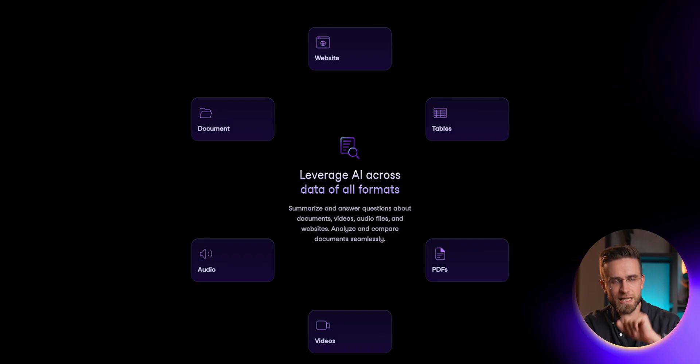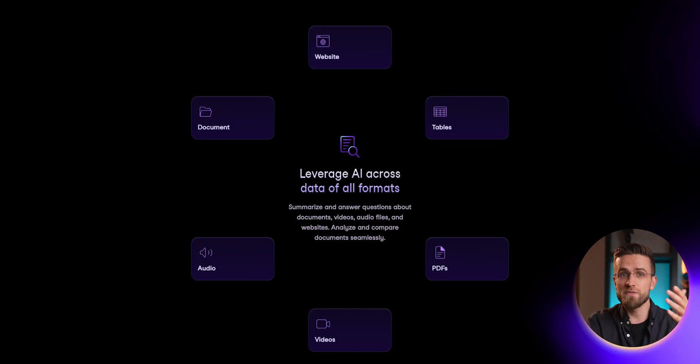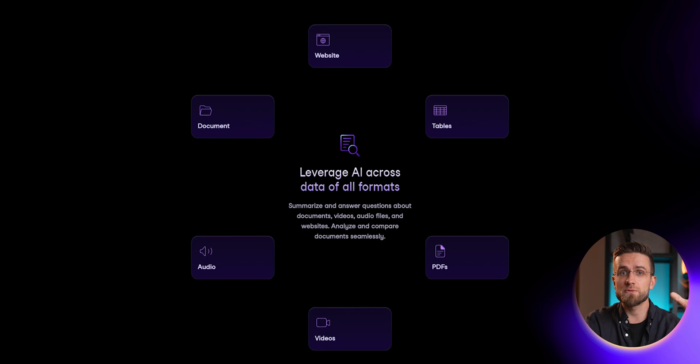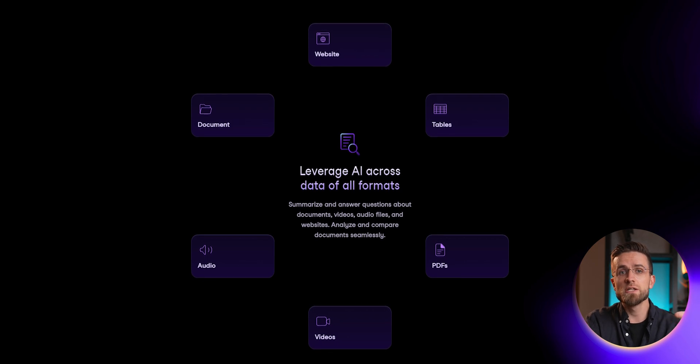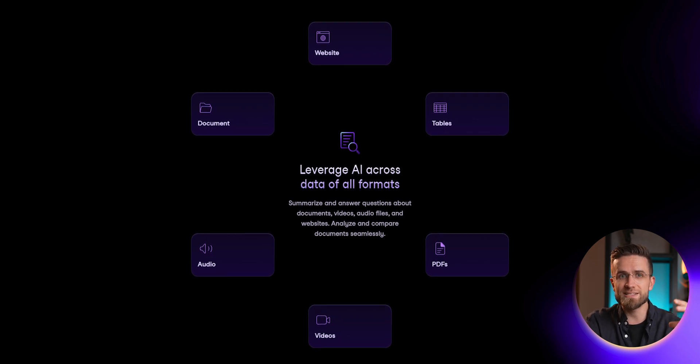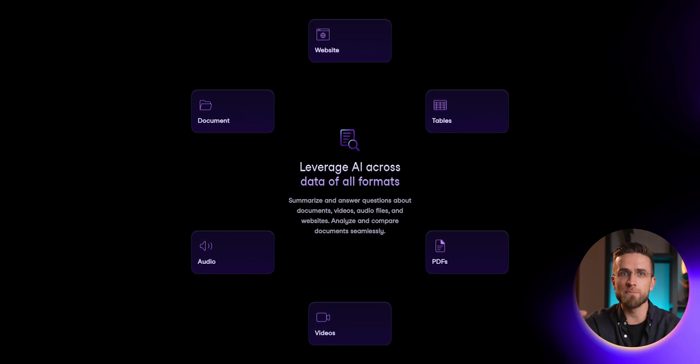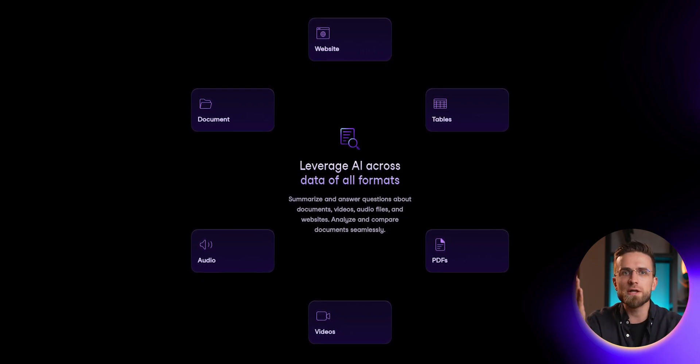So by taking prompting out of the equation, you massively increase the odds of getting good results. With VectorShift, you can create your own knowledge base that won't ever be seen by any model but the one you use.